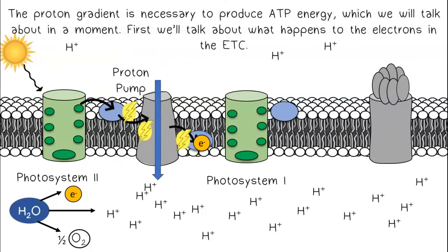The proton gradient is necessary to produce ATP energy, which we will talk about in a moment. First, we'll talk about what happens to the electrons in the ETC.